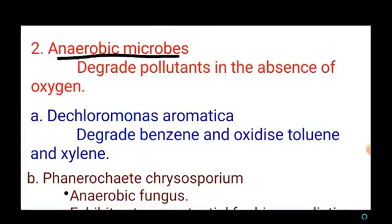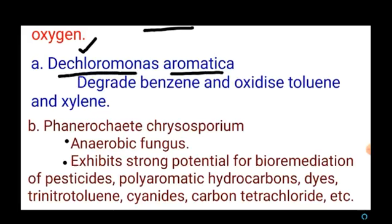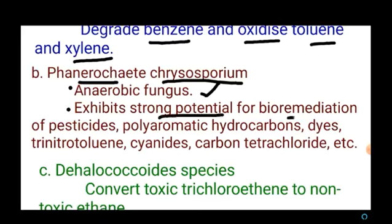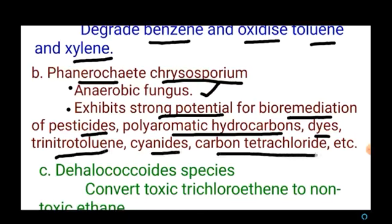Anaerobic microbes in bioremediation mainly degrade pollutants in the absence of oxygen. D. chloromonas aromatica degrades benzene and oxidizes toluene and xylene. Phanerochaete chrysosporium is an anaerobic fungus with strong potential for bioremediation of pesticides, polyaromatic hydrocarbons, dyes, trinitrotoluene, cyanides, and carbon chlorides.